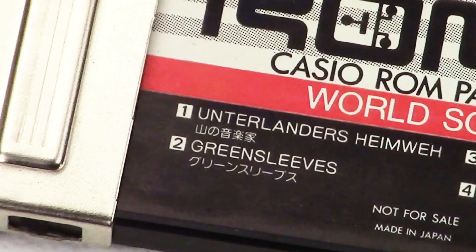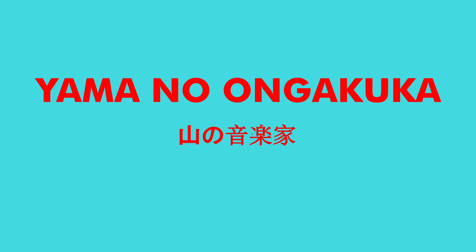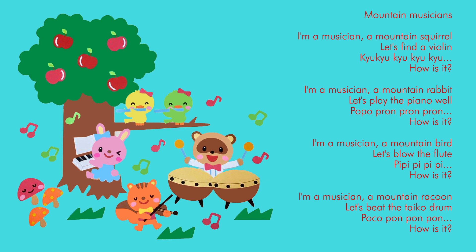With the help of those Japanese characters, I was able to find a version of the demo melody with Japanese lyrics — a children's song called Yamano ongakuka, which means something like 'mountain musicians.' The lyrics are about animals from the mountains that play different instruments, which are then imitated by the singer, like in a typical nursery rhyme with fun actions. So it's definitely not a version of Unterländers Heimweh. It's also about mountains, but something completely different. The song first appeared in April 1964 in a five-minute Japanese TV and radio show called Minna no Uta — 'Everybody's Song' — produced by the Japan Broadcasting Corporation, NHK.